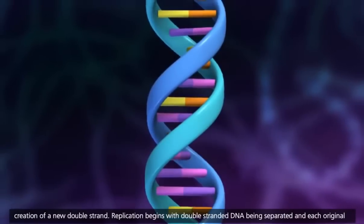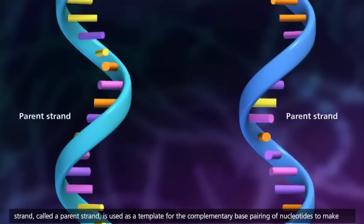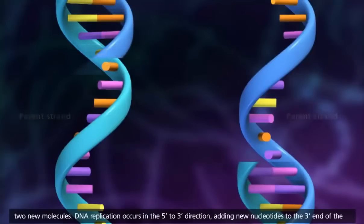Replication begins with double-stranded DNA being separated, and each original strand, called a parent strand, is used as a template for the complementary base pairing of nucleotides to make two new molecules.